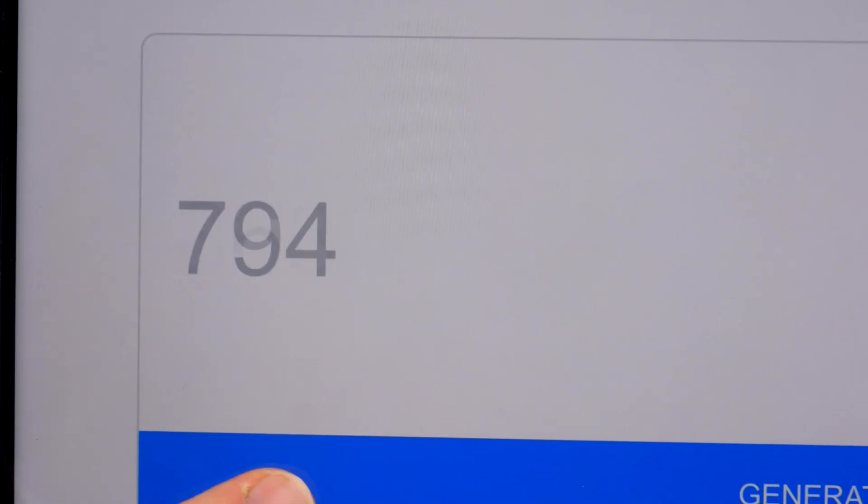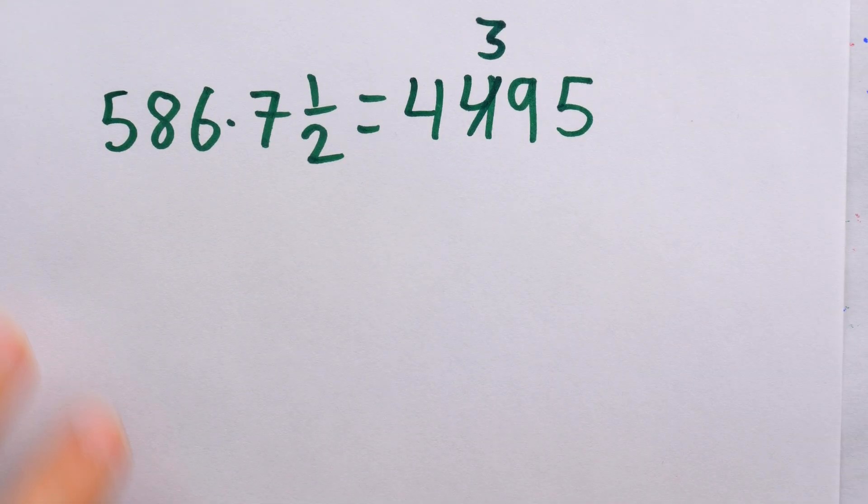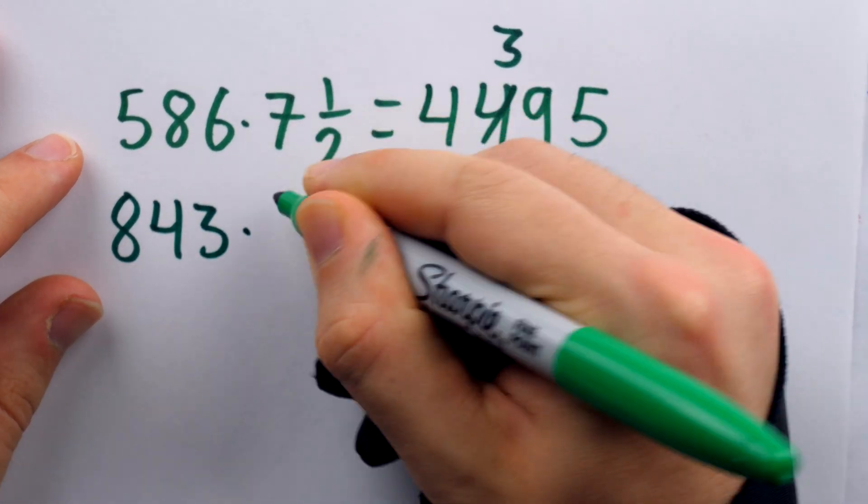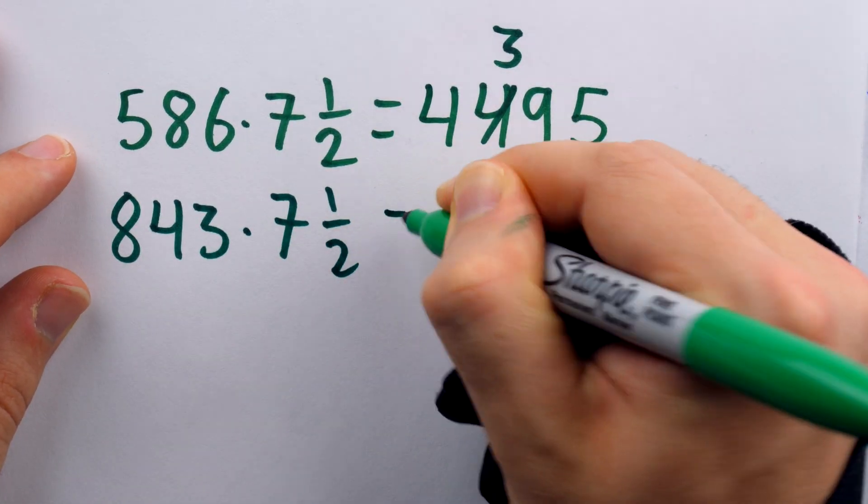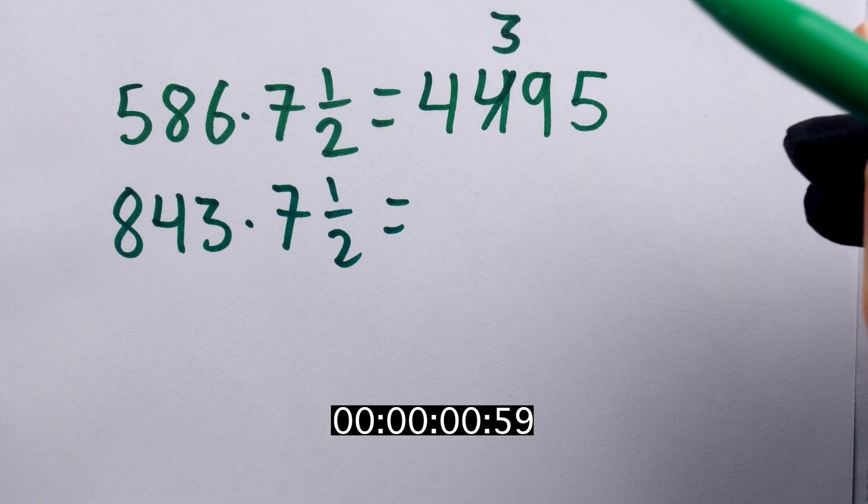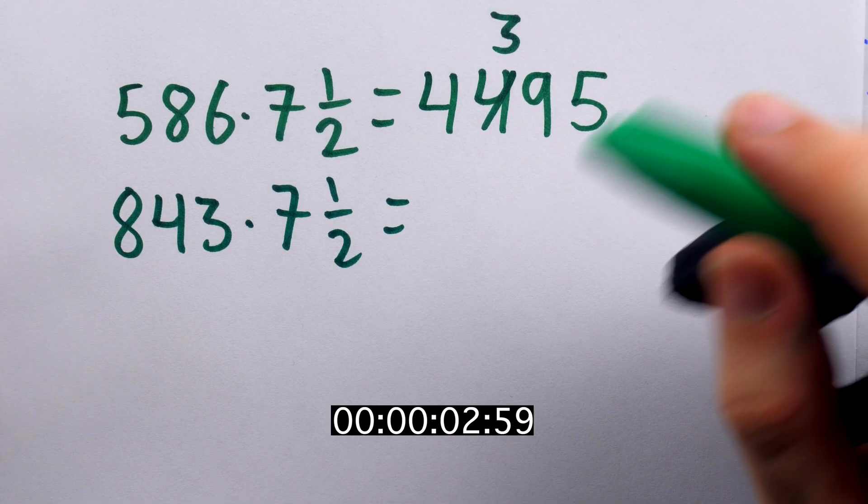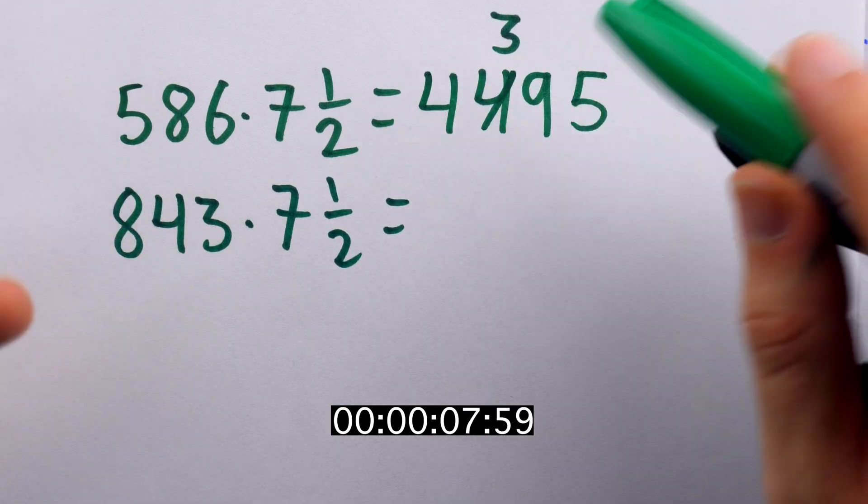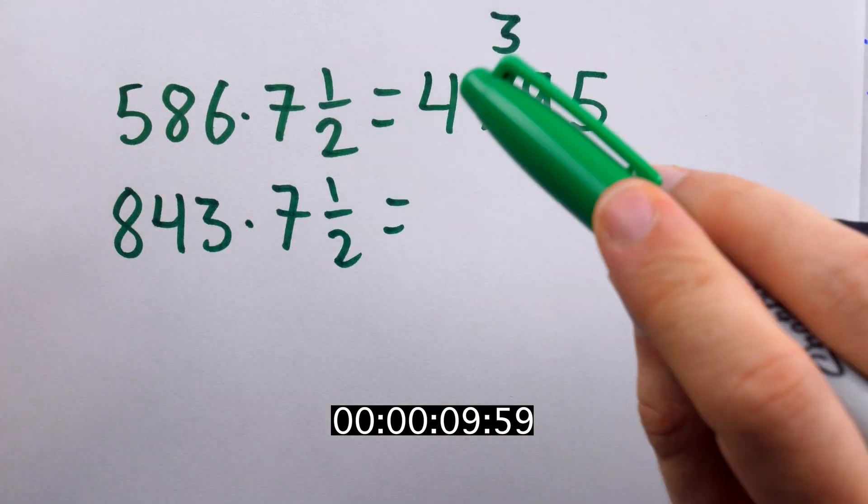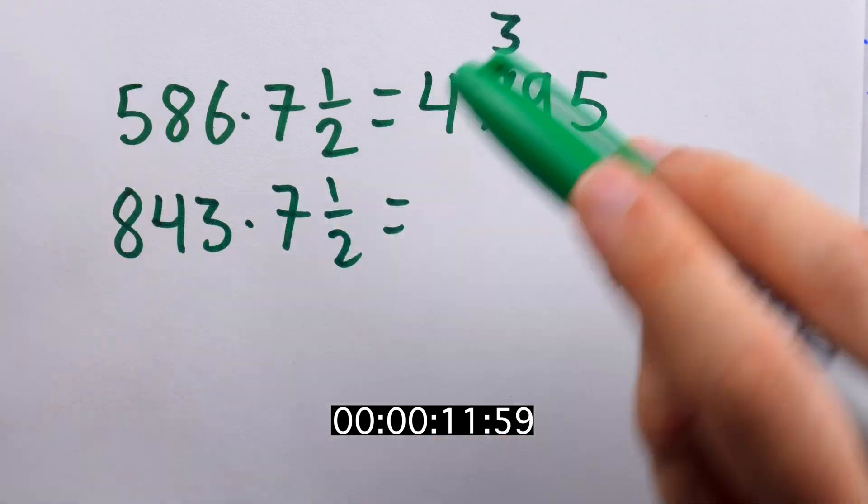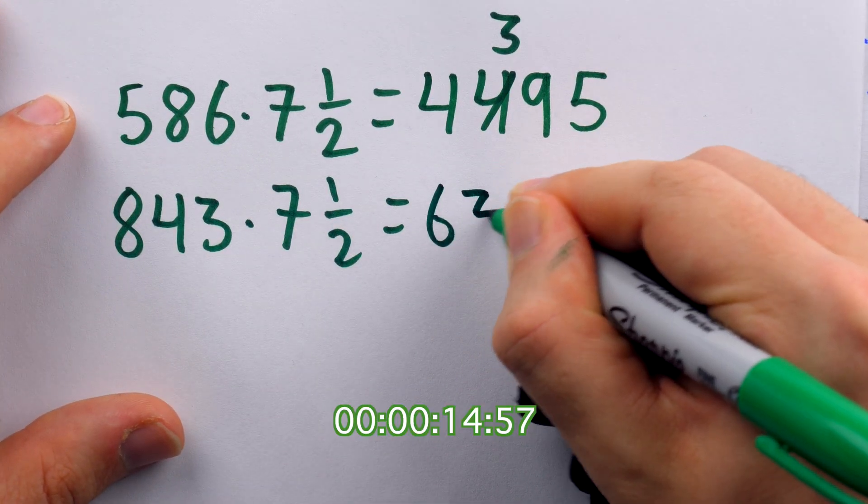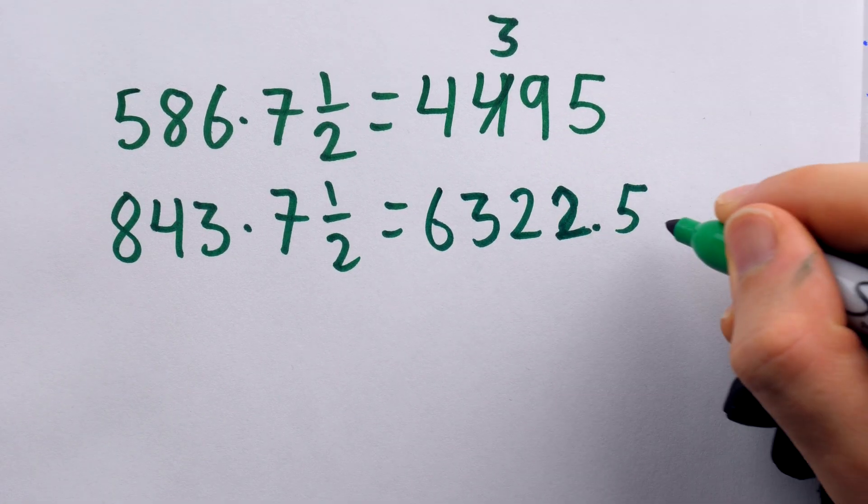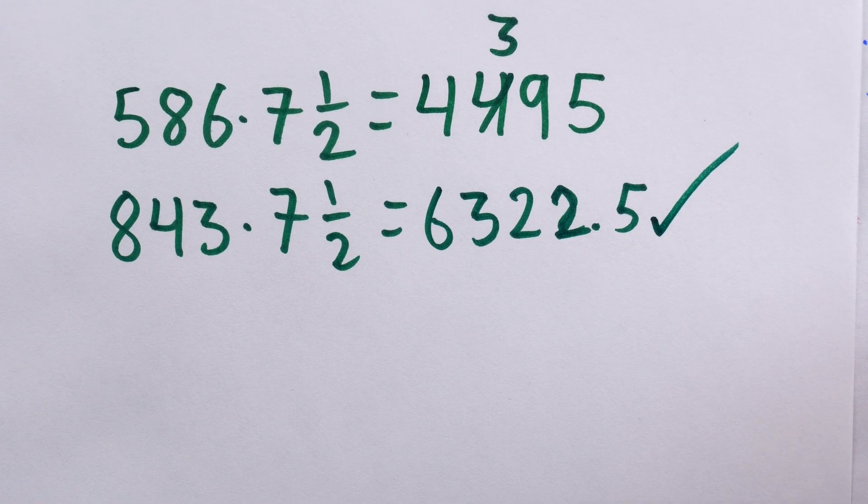All right, let's try again. And for our second number, we have 843. Multiply this by 7 and a half. 843 times 7 and a half in my head. 6,322.5, that is my final answer. We got that one correct. Let's try one more.